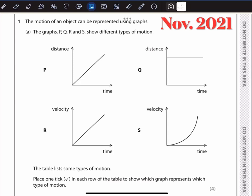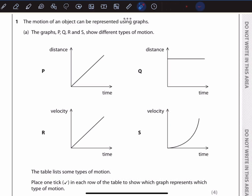Hi everyone, welcome back to our channel. Here we have four different graphs P, Q, R and S. Each graph represents a different type of motion, and your task is to match these graphs with the types of motion listed in the table. Let's break it down. Graph P is a distance-time graph where the line